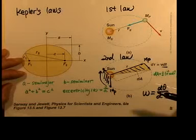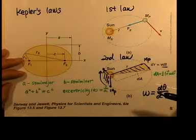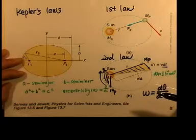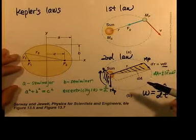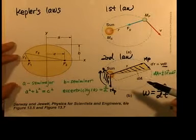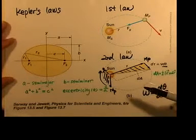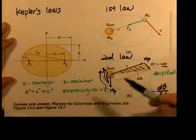Kepler's third law says the square of the orbital period of any planet is proportional to the cube of the semi-major axis of the elliptical orbit. Now, semi-major axis —